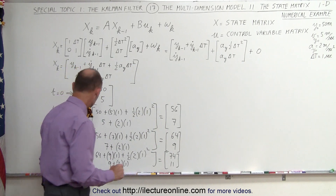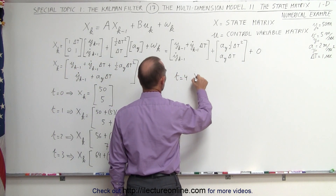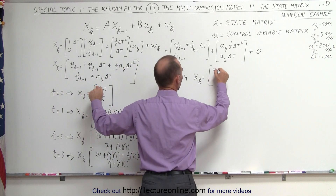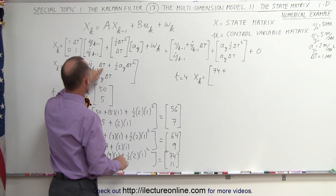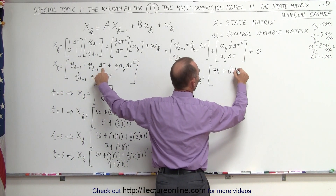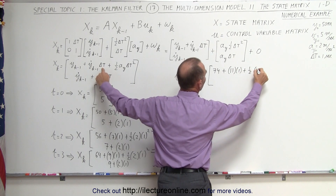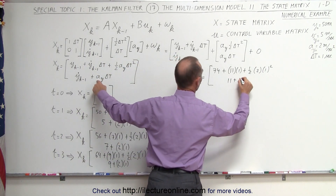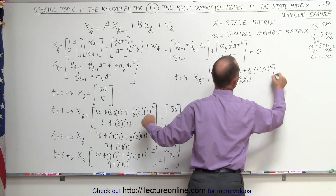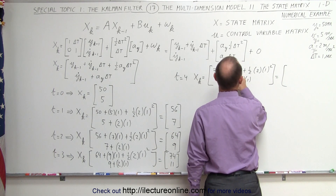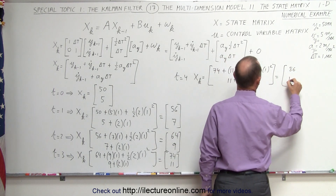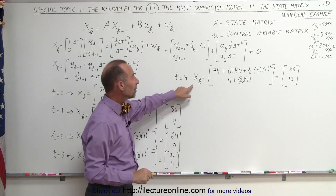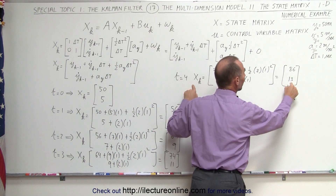Let's do it one more time. When time is equal to 4, the new state matrix is equal to the previous position (74), plus the velocity (11) times delta T (1), plus one half times acceleration times delta T squared. The previous velocity is 11, plus the acceleration times delta T. This now becomes 74 plus 11 is 85, plus 1 is 86, and 11 plus 2 is 13. Meaning after 1, 2, 3, 4 intervals, our state matrix now is a position of 86 and a velocity of 13.